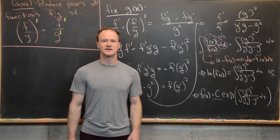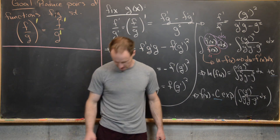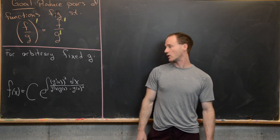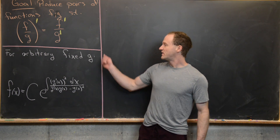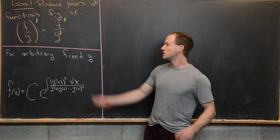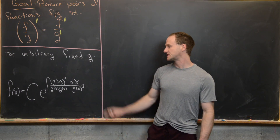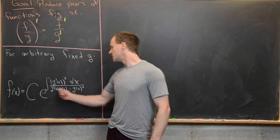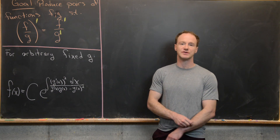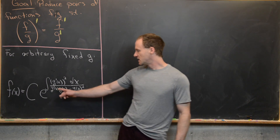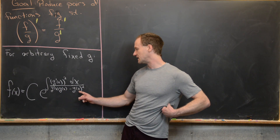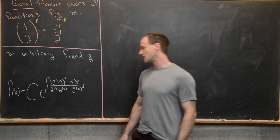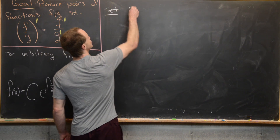Let's transport this formula and work out some examples. On the last board, we had a dream to simplify the quotient rule. We found that fixing an arbitrary function g, our dream quotient rule holds if f satisfies: f equals a constant times e to the antiderivative of g prime squared over (g prime times g minus g squared) with respect to x. Now let's work out a specific example with a nice g — let's set g of x equal to a power function, x to the r.